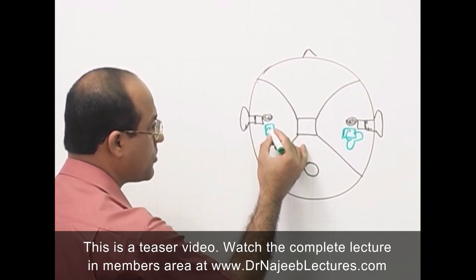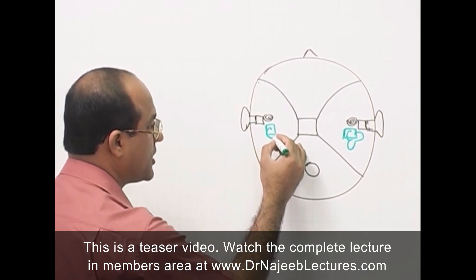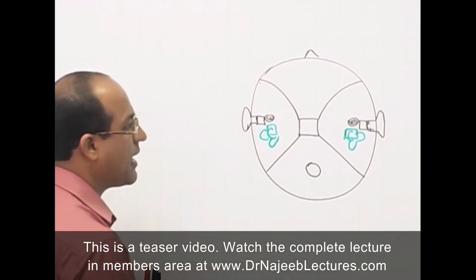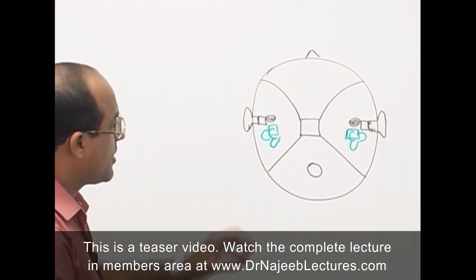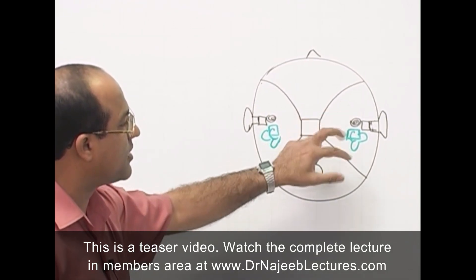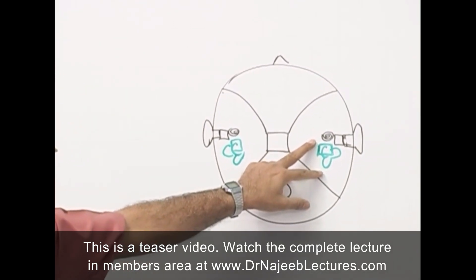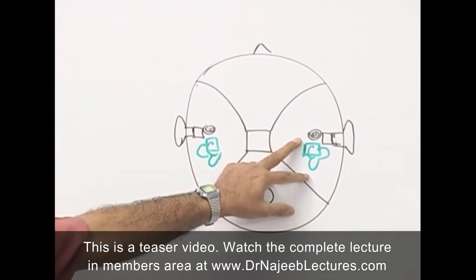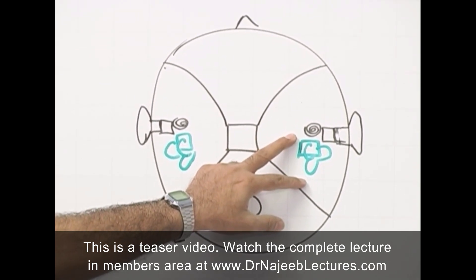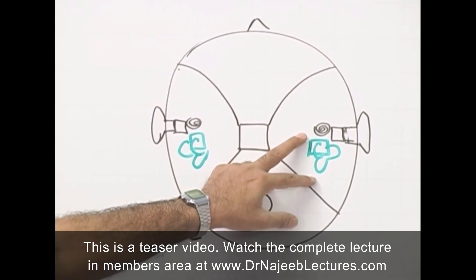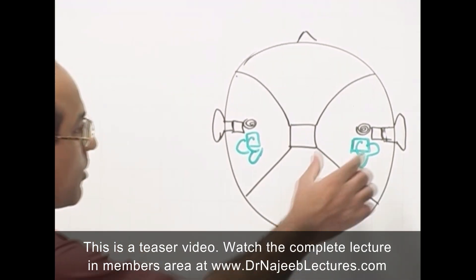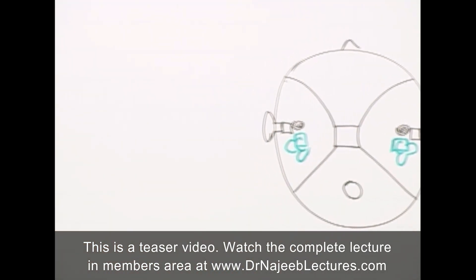With the vestibule there are three semicircular canals: anterior (or superior), posterior, and lateral. Today we will cover the anatomy, physiology, and histology of this structure, then its central connections and clinical importance. I will draw this structure in a magnified way.